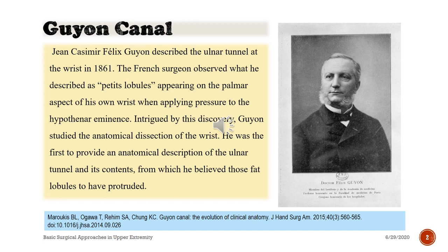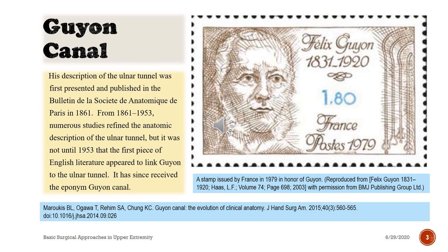Jean Casimir Felix Guyon described the ulnar tunnel at the wrist in 1861. The French surgeon observed what he described as petite lobules appearing on the palmar aspect of his own wrist when applying pressure to the hypothenar eminence. Intrigued by this discovery, Guyon studied the anatomical dissection of the wrist. He was the first to provide an anatomical description of the ulnar tunnel and its contents, from which he believed those fat lobules to have protruded. His description was first presented and published in the Bulletin de la Société d'Anatomique de Paris in 1861.